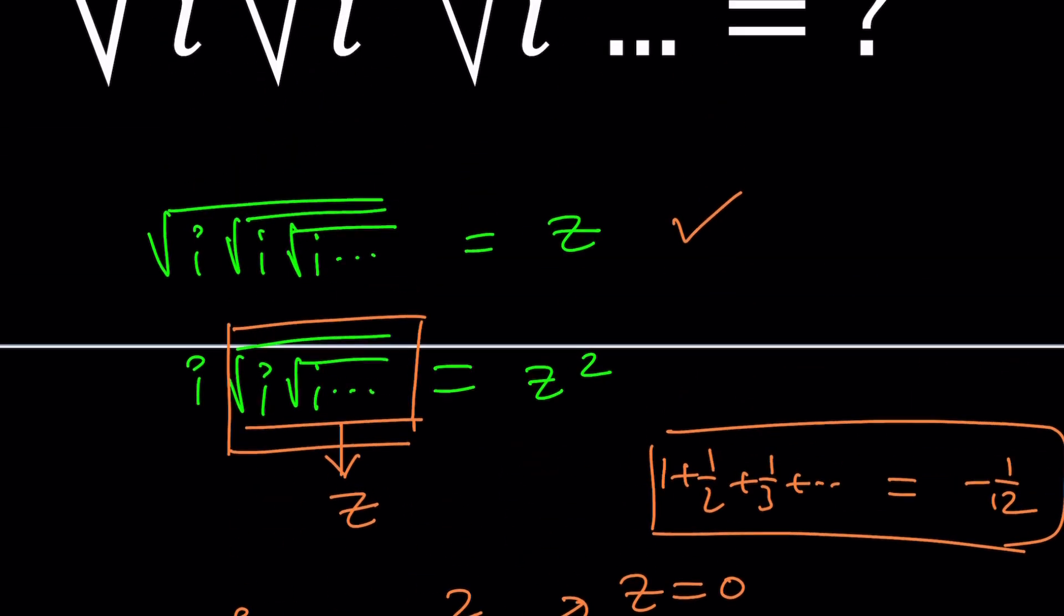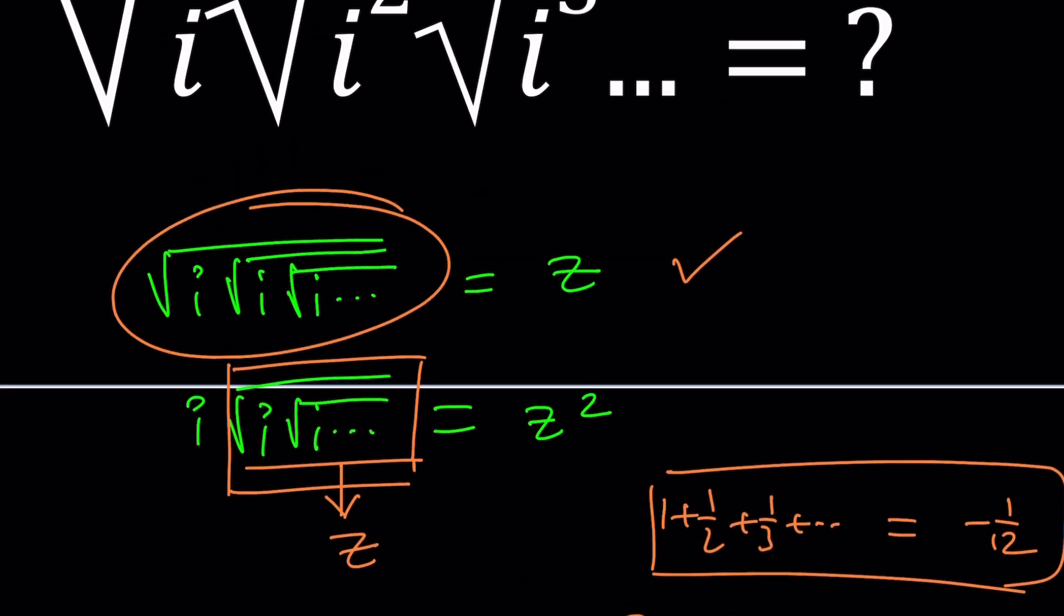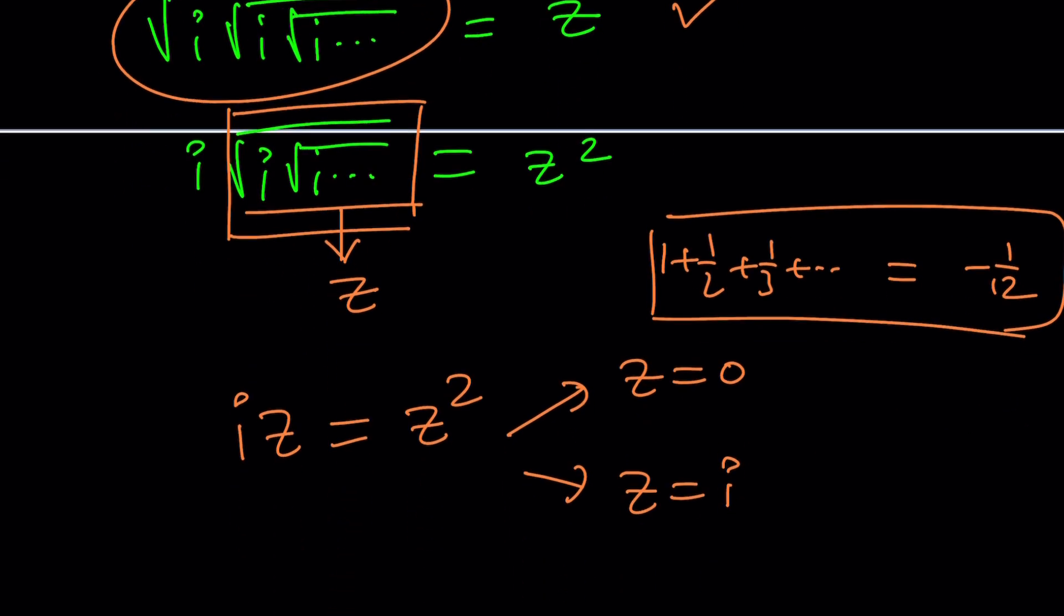If z is zero, then we're saying this whole thing is zero, but that's not true. We know that i squared is negative one. The square root of i is something involving one-half. This can't be zero—it's imaginary, complex, but it's not zero. So this is not possible. Then the only option left is z equals i.